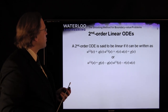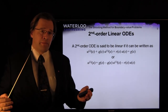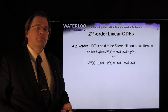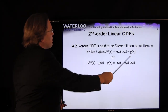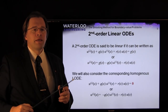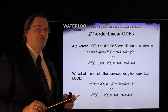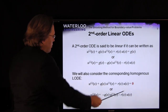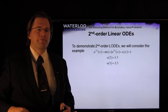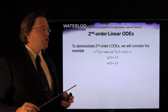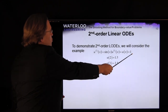A second-order ODE is linear if it can be written as: second derivative plus a function of x times the first derivative plus a function of x times u(x) equals a forcing function. For use with an IVP solver, we write the second derivative as the forcing function minus the balance of the equation. As a specific example, we use an ODE with the coefficient of the derivative equal to sin(x) and forcing function equal to 1, with boundary values u(2) = 1.5 and u(3) = 2.5.